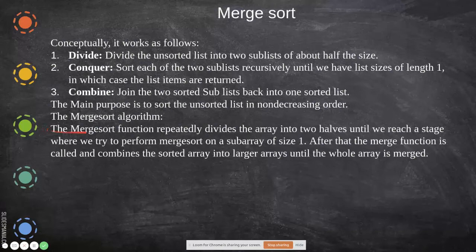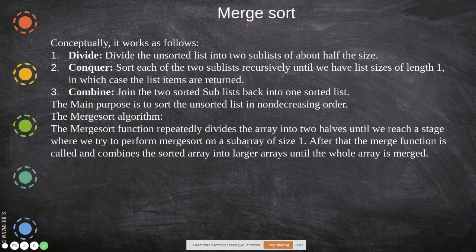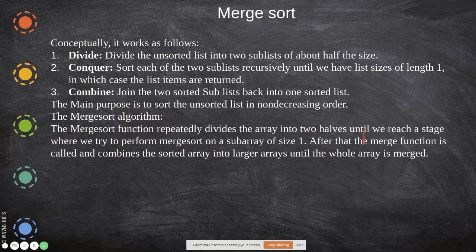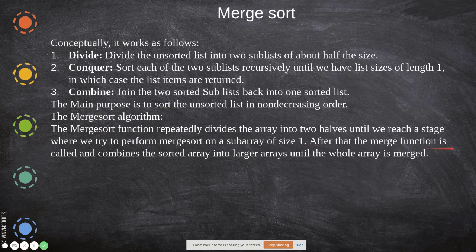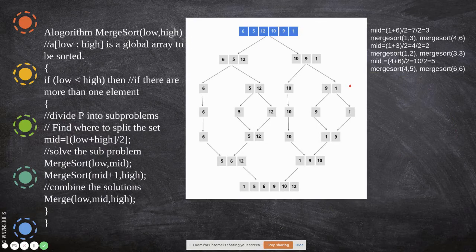There are many sorting algorithms; here we are going to see the merge sort algorithm. It repeatedly divides the array into two halves until we reach a subarray of size one. After that, the merge function is called to combine the sorted arrays into larger arrays until the whole array is merged. This is the core logic.